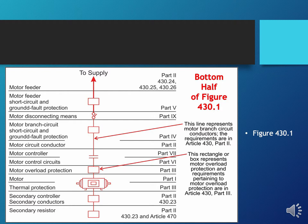Here's the bottom half of Figure 430.1. About three-fourths of the way down is the motor. Coming back from the motor toward the source, we have overload protection — that rectangle represents motor overload protection, and its requirements are found in Part 3 of Article 430. Then we have the motor controller and motor control circuits. The line going up represents motor branch circuit conductors, and those requirements are in Part 2 of Article 430.